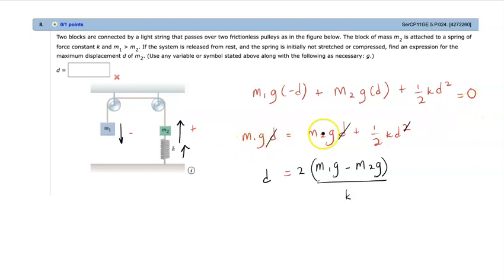So M1GD equals to M2GD plus 1 over 2 KD squared, and I see an opportunity to cancel out the D. So I'm left with only one D over here. So rearranging this equation to solve for D, I get 2 M1G minus M2G over K, or I can also factor out G from here. So it becomes 2G times M1 minus M2 over K.